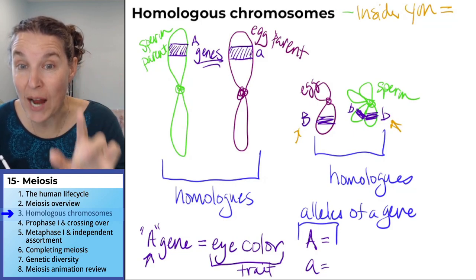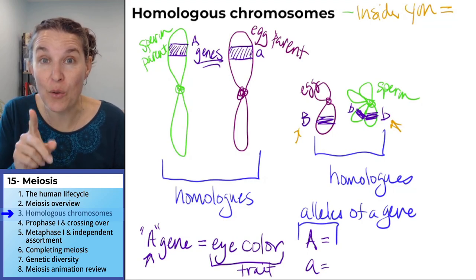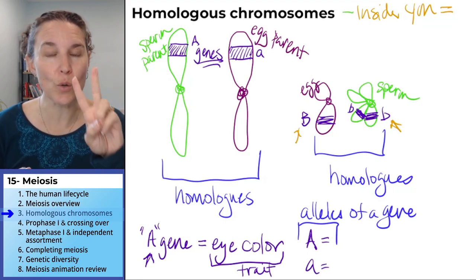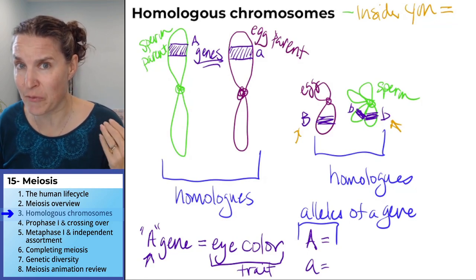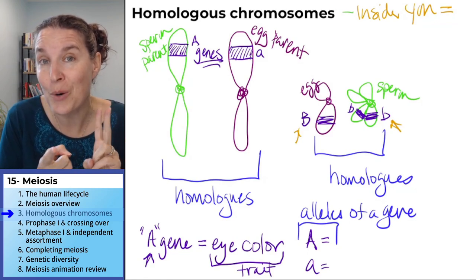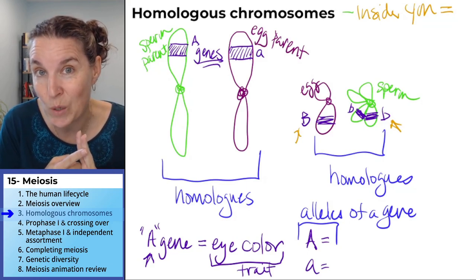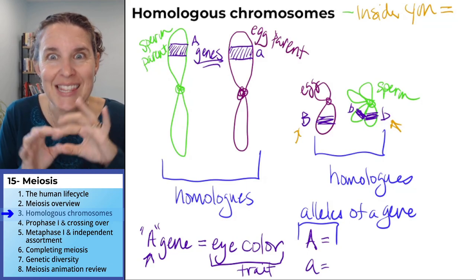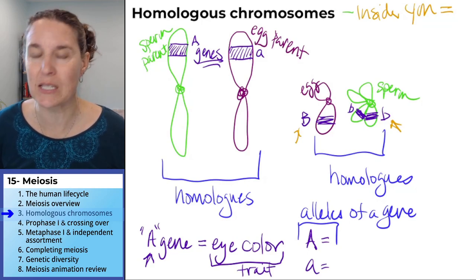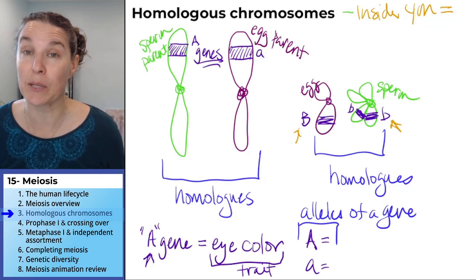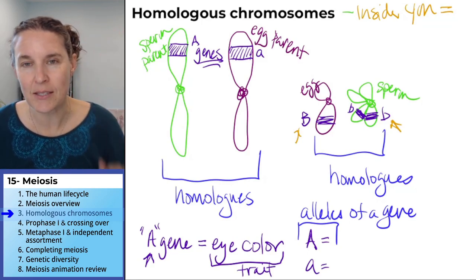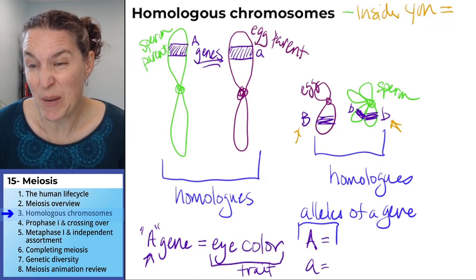Keep track of homologous chromosomes because we're going to go through meiosis I — just two stages of meiosis I. We're going to look at prophase I and metaphase I, because that's where the big things happen, where the big differences take place. Everything else is just like mitosis.